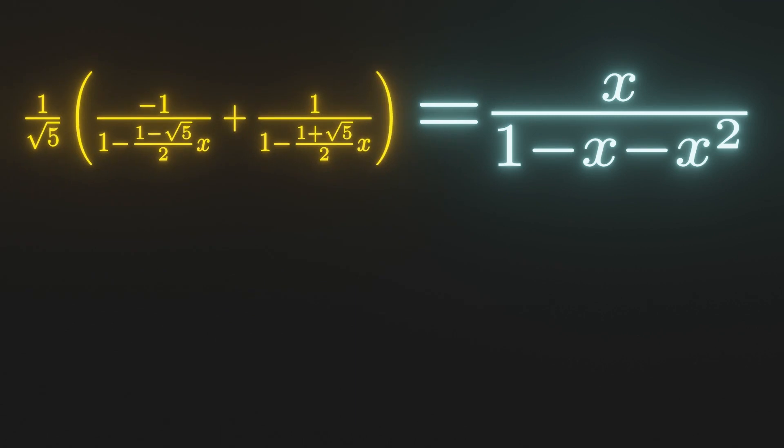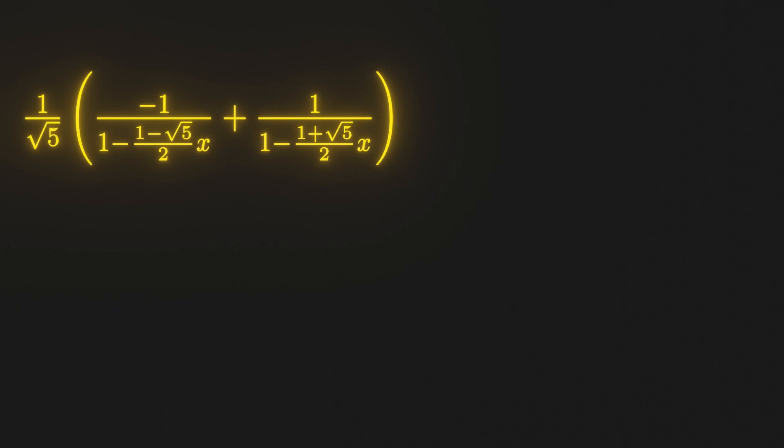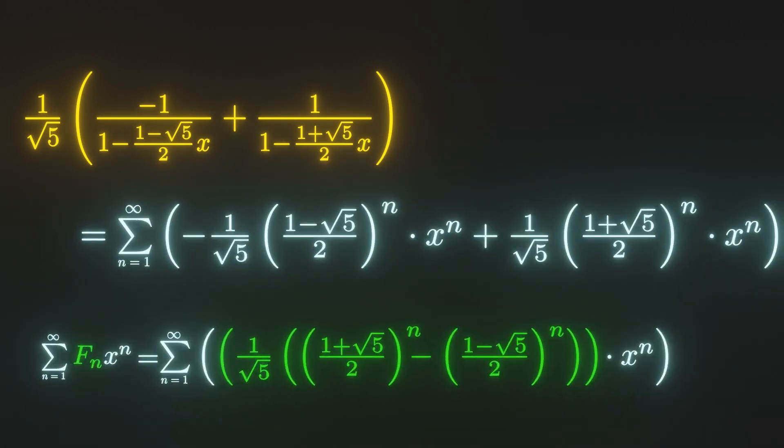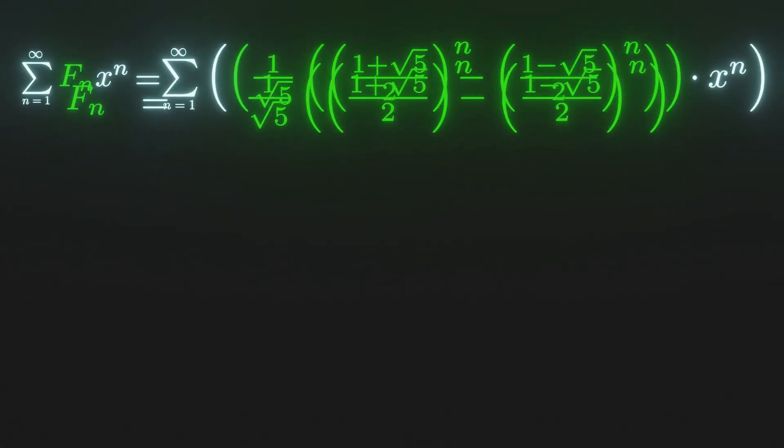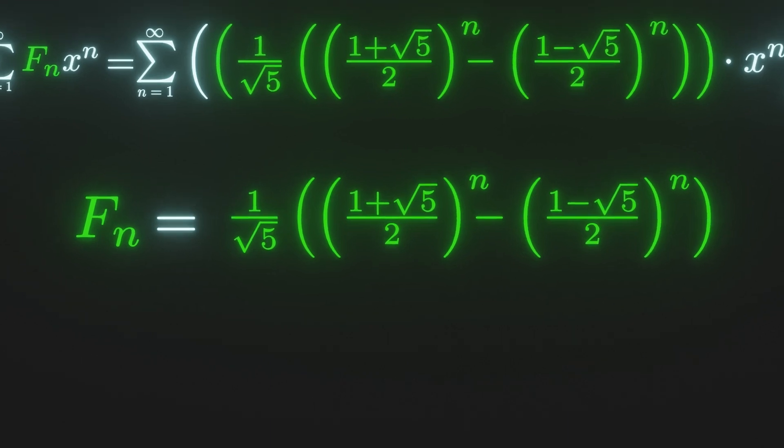We have successfully separated our fraction. We have finally gotten them into a form where we can use our infinite geometric sum formula. After applying that, we can get the explicit formula by ignoring the x to the n.